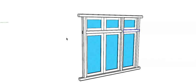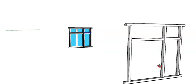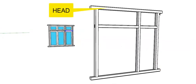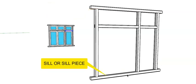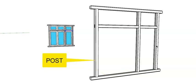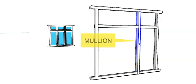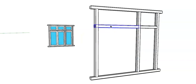Let us look at the frame in more detail. The top component is called the head, the bottom component is called the sill or sill piece, and the two vertical components are called the os. The central vertical component is called the mullion, and the two intermediate horizontal members are called transoms.